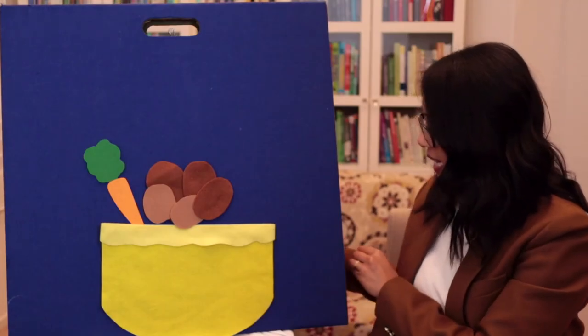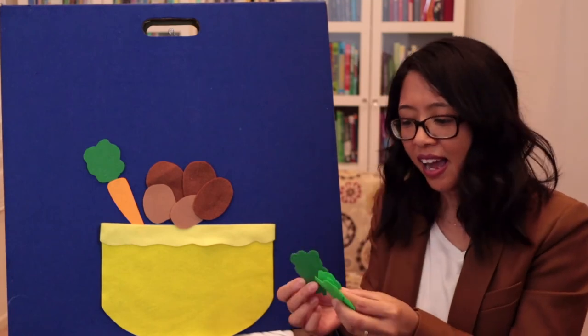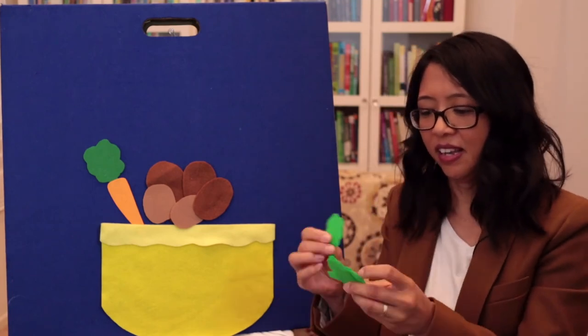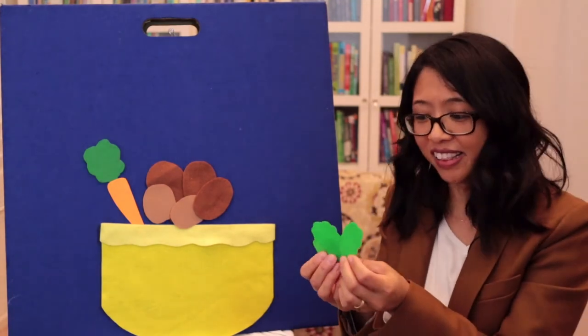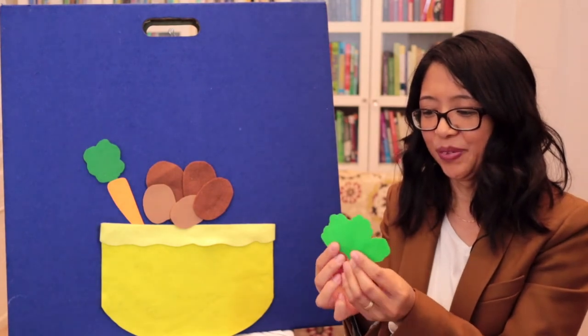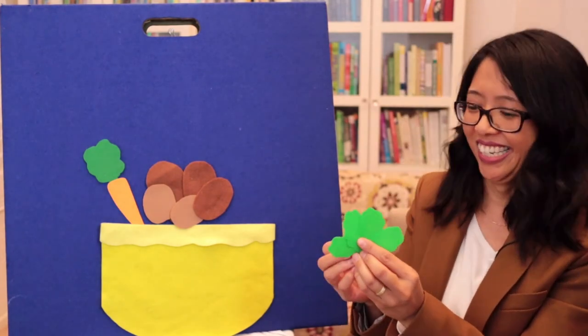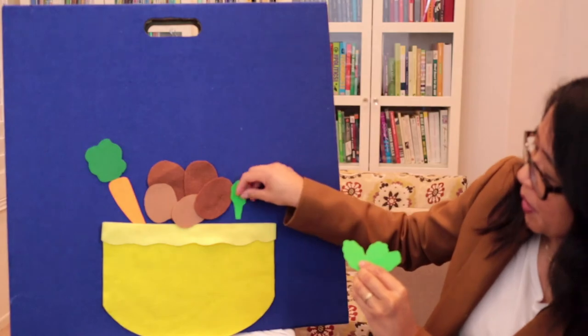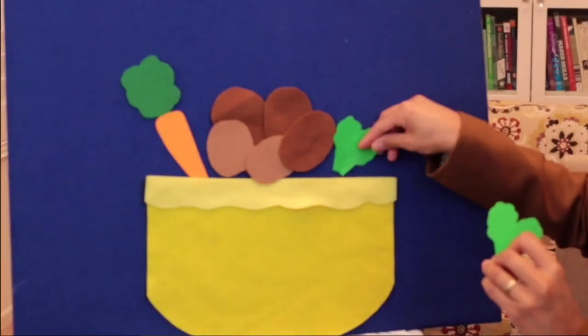And lastly, I cut some pieces out for broccoli. Here's some green pieces. And I'm going to put broccoli into my soup as well.